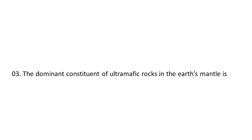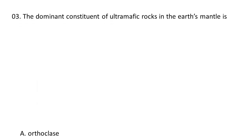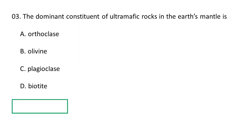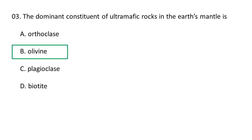Next question: The dominant constituent of ultramafic rocks in the earth's mantle is A. Orthoclase, B. Olivine, C. Plagioclase, D. Biotite. The dominant constituent of ultramafic rocks in the earth's mantle is olivine. Olivine makes up around 40% or more of the total volume of the four most abundant mantle families in peridotite, which is a coarse-grained ultramafic rock. B is the correct option.